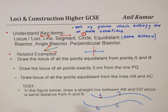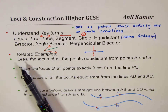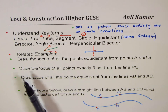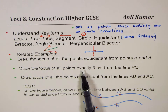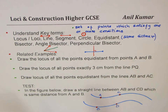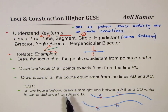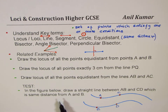Now we have examples to solve. Example one: draw the locus of all the points equidistant from points A and B. Example two: draw the locus of all points exactly three centimeters from the line PQ. Example three: draw the locus of all the points equidistant from the lines AB and AC. Then we have a test question: in the figure below, draw a straight line between AB and CD which is the same distance from A and B.